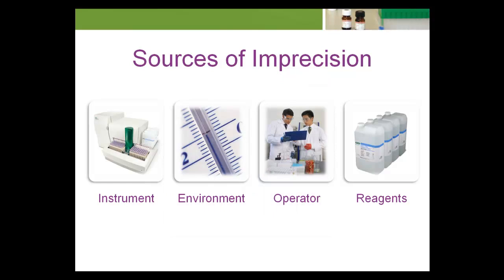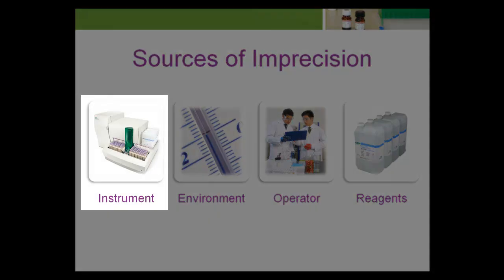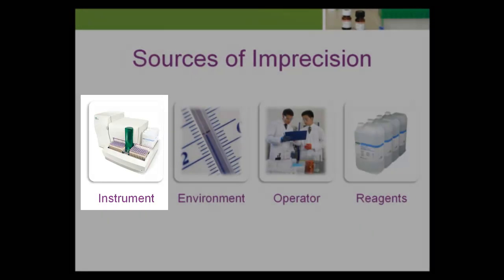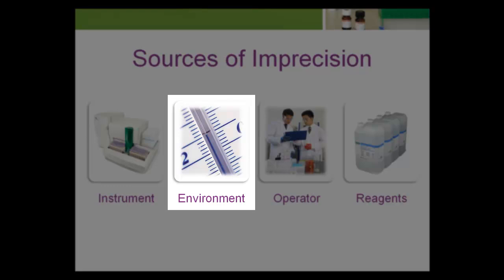Several sources can contribute to imprecision in a testing system. The age of the instrument, number of tests it's produced over its lifetime, and the number of hardware and/or software changes can all have an adverse effect on imprecision. The computerized components of modern laboratory equipment can be sensitive to environmental changes like temperature, electrical power surges, and humidity.